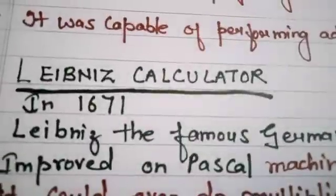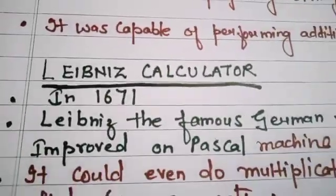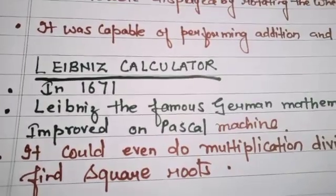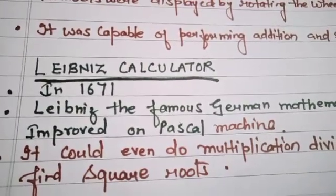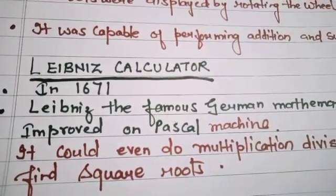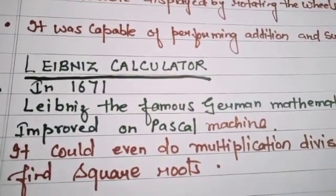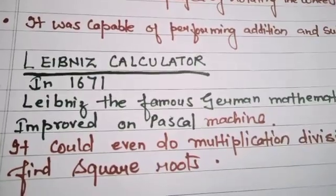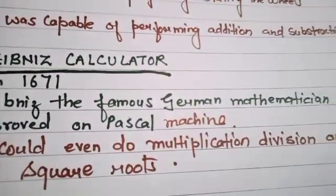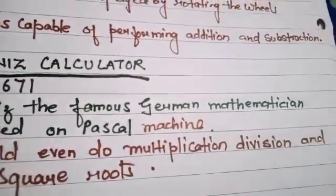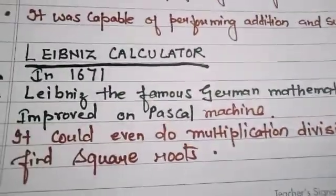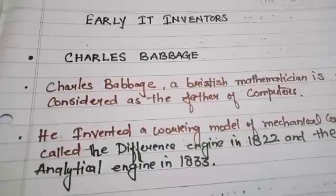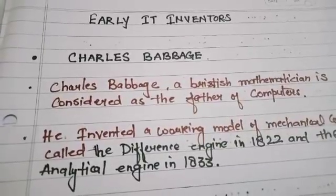Then, Leibniz's calculator. In 1671, Leibniz, the famous German mathematician, improved on Pascal's machine. It could even do multiplication, division and find square root.